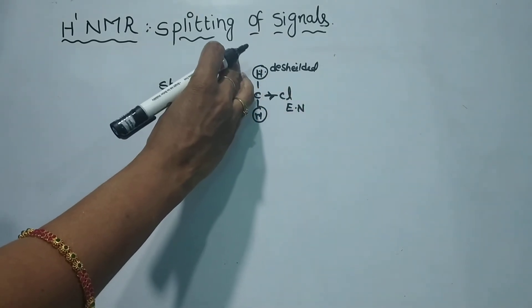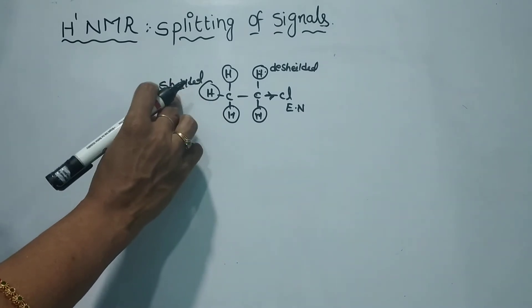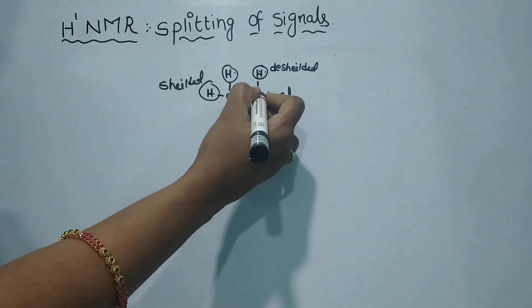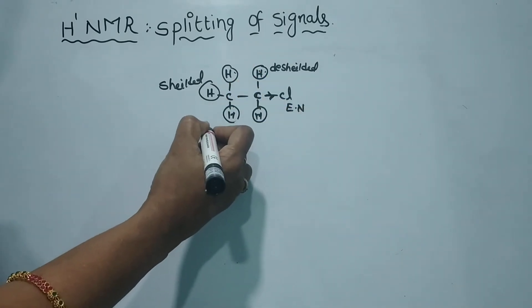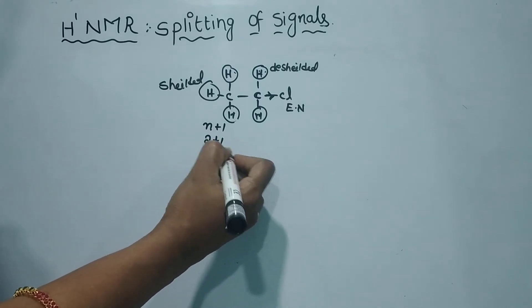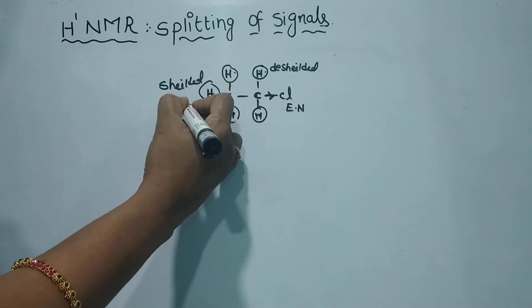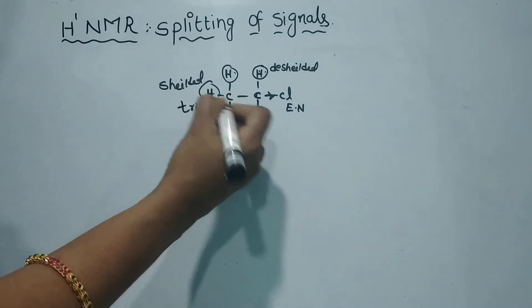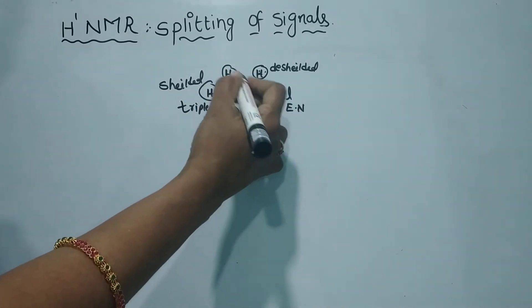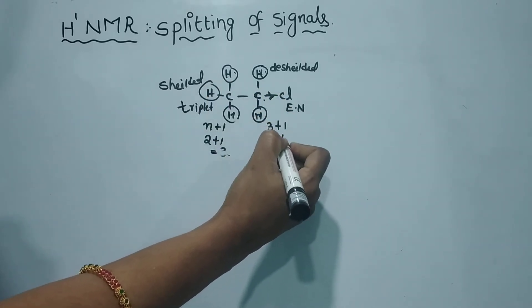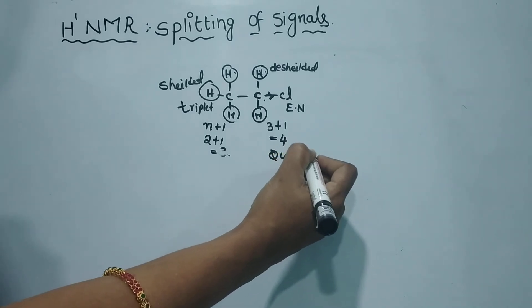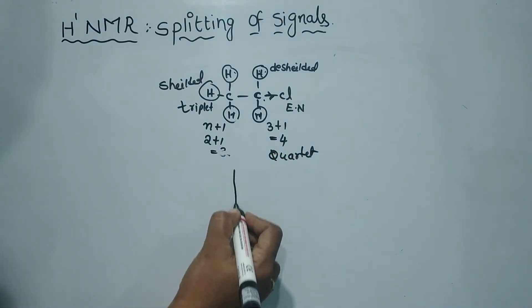To summarize: with 2 adjacent hydrogens using n plus 1, 2 plus 1 equals 3, so the signal is a triplet. With 3 adjacent hydrogens, 3 plus 1 equals 4, so the signal is a quartet.